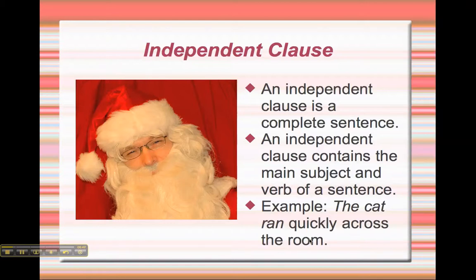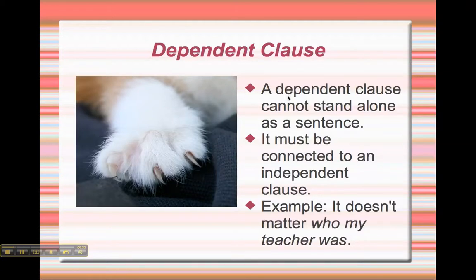Quickly across the room can't stand on its own, which would make it a dependent clause. A dependent clause cannot stand alone as a sentence, and it must be connected to an independent clause. So the example we have is: it doesn't matter who my teacher was. The first half, it doesn't matter, is an independent clause — it can stand by itself. The second half, who my teacher was, can't stand alone as a sentence. It doesn't make sense, so that makes it a dependent clause. It relies on it doesn't matter to finish the clause and make it a complete sentence.